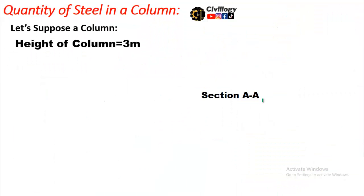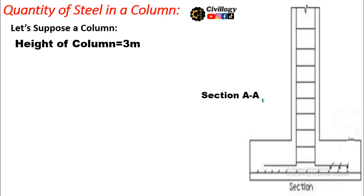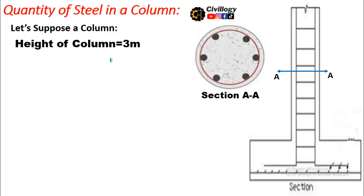Let's assume the height of a column. This is the longitudinal section of the column and the height of the column is 3 meters. If we cut the cross section, this is the detail of longitudinal bars provided in the circular column, which are 6 in number. It is very important to know that the minimum number of bars in a circular column should be equal to 6.